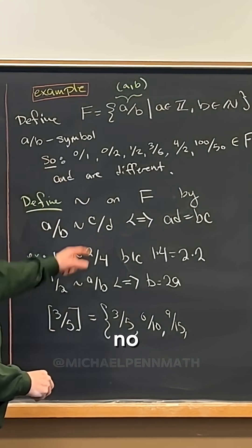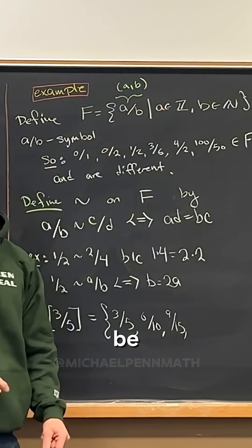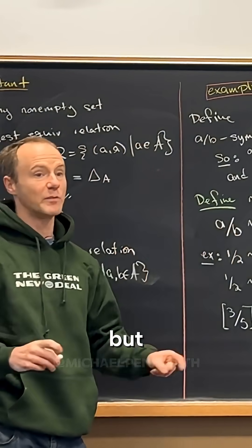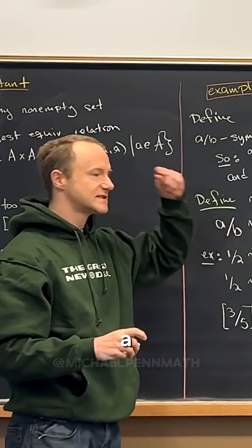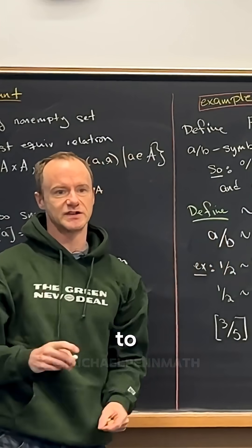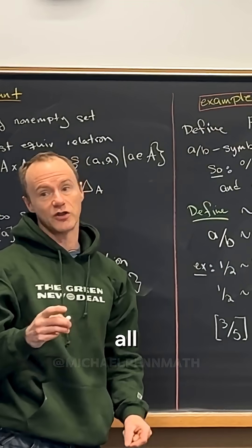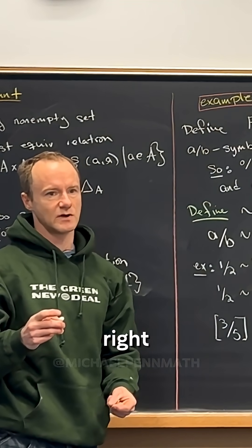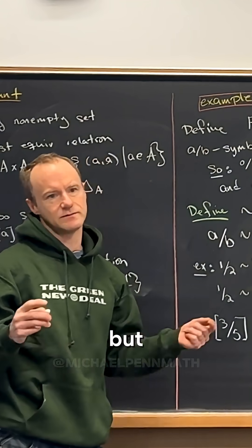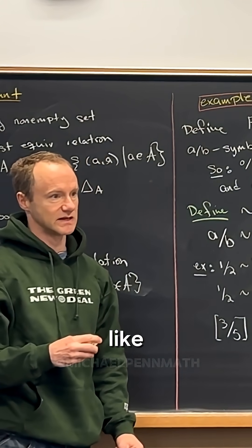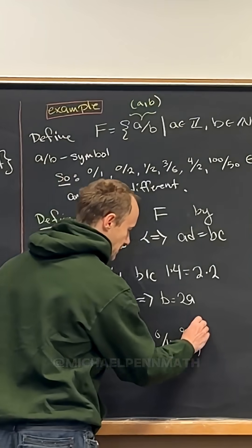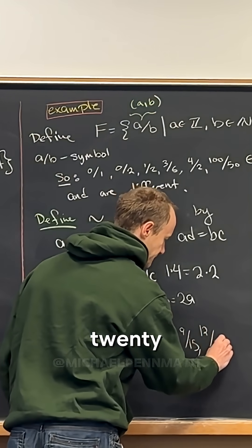No, because we're not allowing the denominator to be negative. There is a construction where we could take the denominator to be all non-negative, non-zero integers, and then you could have minus 3 over minus 5. But I think it's a little cleaner to do it this way. And then the next one would be 12 slash 20.